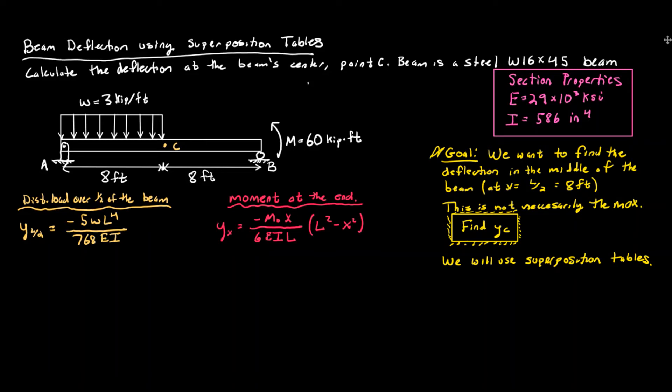In this video we're going to be calculating beam deflection of this beam using the superposition tables, and we're going to want to be calculating it at the center of the beam. So that's going to be that point C right here. We want to find the deflection in the middle of the beam, so that's going to be at L over 2 — the whole length of the beam divided by 2, which is 8 feet in this case.